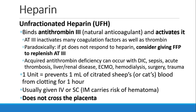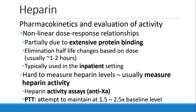Heparin is usually given IV or sub-Q. We don't like to give it intramuscular because of the risk of formation of a hematoma. Heparin is charged and does not cross the placenta. Heparin can be difficult to dose because of the non-linear dose-response relationships, partly due to its extensive protein binding. Its elimination half-life changes based on the dose, although it's usually around an hour or two. Usually we use heparin in the inpatient setting. It's hard to measure heparin levels, so usually we measure heparin activity using heparin activity assays, where we measure anti-factor Xa activity.